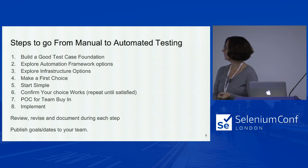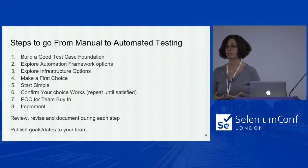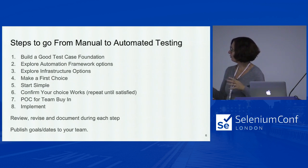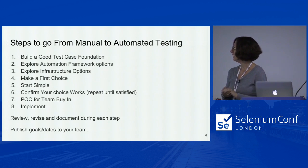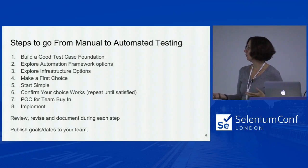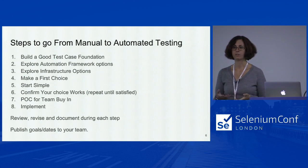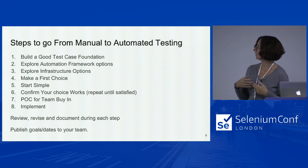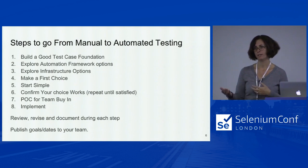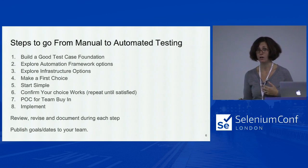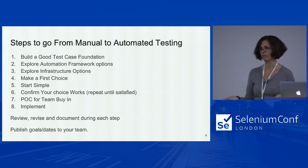The general steps: you're going to build a good test case foundation. You're going to explore both automation and infrastructure options. You're going to make a first choice — and hopefully that is clear after your exploration. Then start simple, really simple. Confirm that your choice works or go back and iterate again. Did you have a plan B? I think I got to plan C or D before I found something I was really happy with. Then have team buy-in, and then implement. At each of these steps you're reviewing, revising, learning more, and it's really important to document as you go.